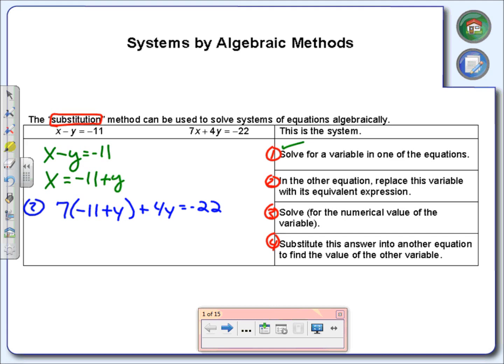Notice I've got an equation with only the variable y. We're going to solve for that y. 7 times negative 11 is negative 77, 7 times y is 7y, and we still have 4y equals negative 22. Notice we're doing step three now, solving for the variable. We can combine those y's together: 7y plus 4y gives me 11y.